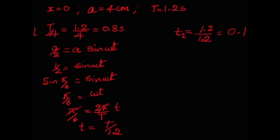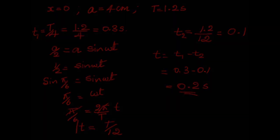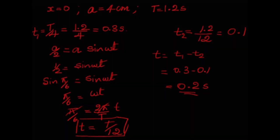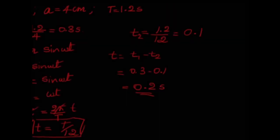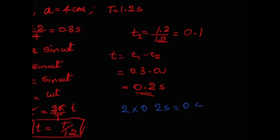Subtracting the two times: time from half amplitude to extreme = t₁ − t₂ = 0.3 − 0.1 = 0.2 seconds. Since the problem asks for motion from x = 2 to x = 4 and back to x = 2, we multiply by 2: 2 × 0.2 = 0.4 seconds. This is the minimum time for the round trip from x = 2 cm to x = 4 cm and back.